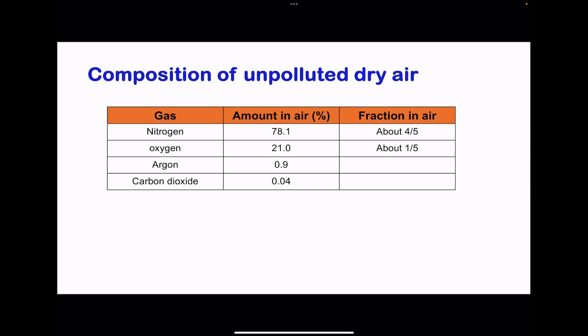Unpolluted air has a composition of about 78.1% nitrogen, 21% oxygen, 0.9% which is usually approximated to 1% argon, and about 0.04% carbon dioxide.